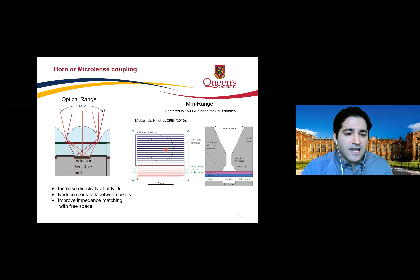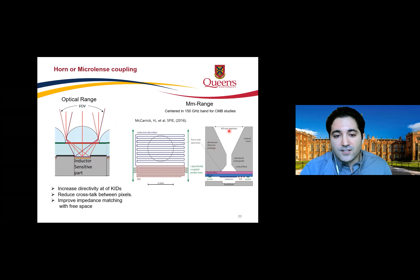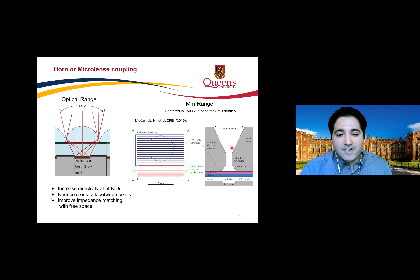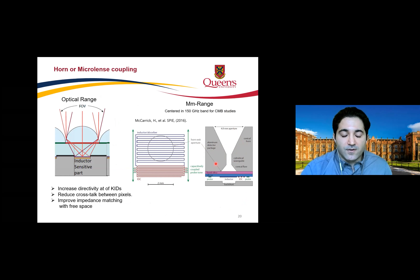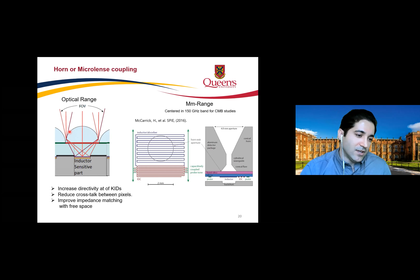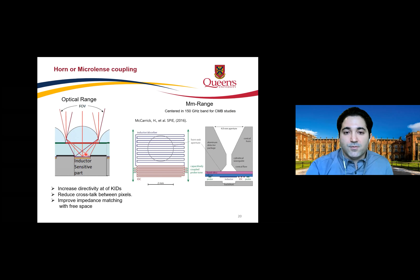To increase absorption and optical coupling, we use guides to direct light onto the sensitive inductive part rather than the interdigitated capacitor part. For the millimeter range, we typically use silicon, aluminum, or copper conical horns. For the optical range, we use micro-lenses — made from a plastic-like material — which focus light from different angles onto the inductive part.